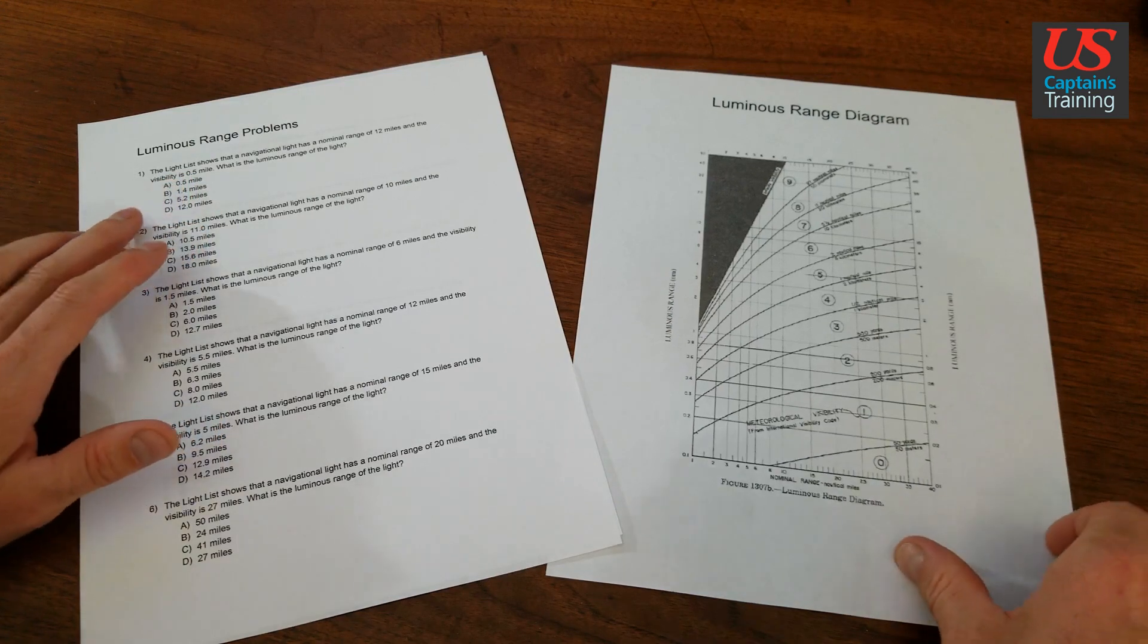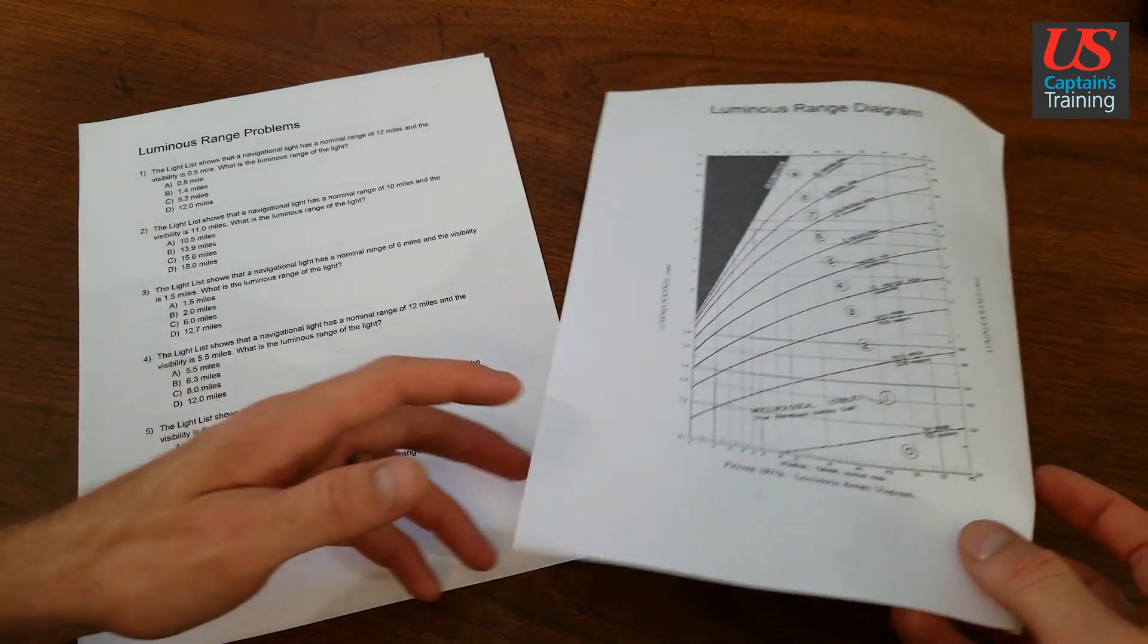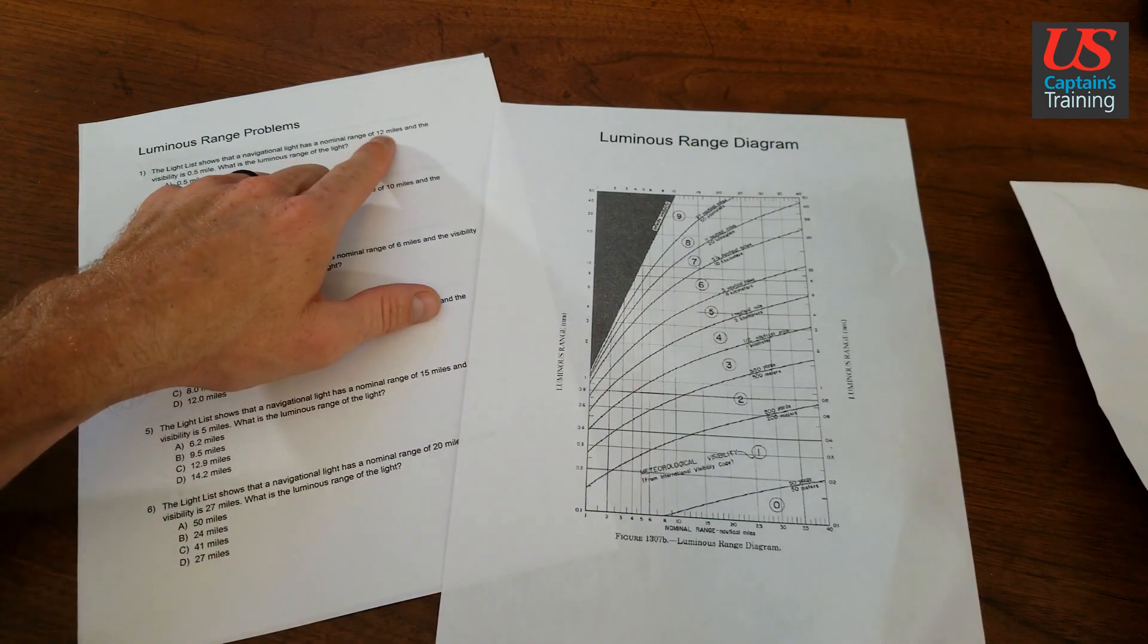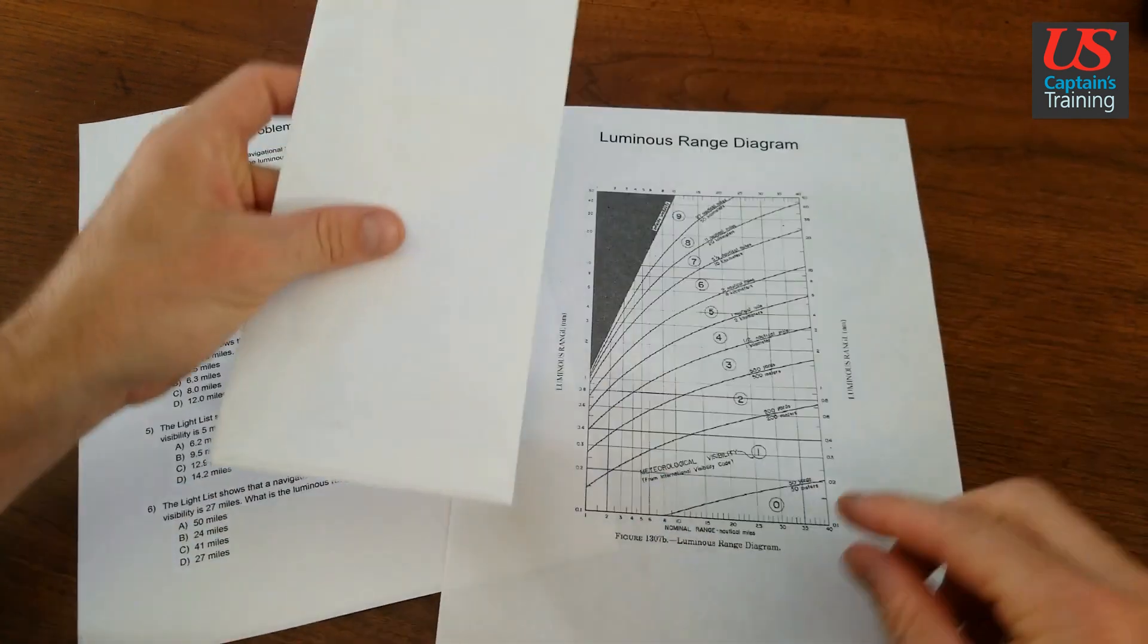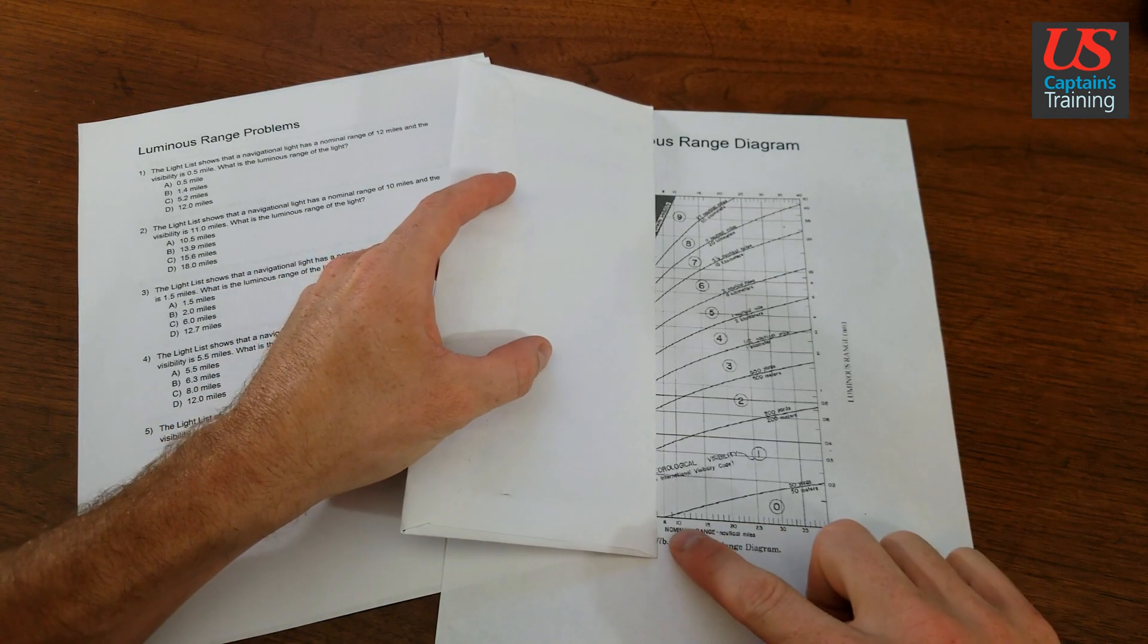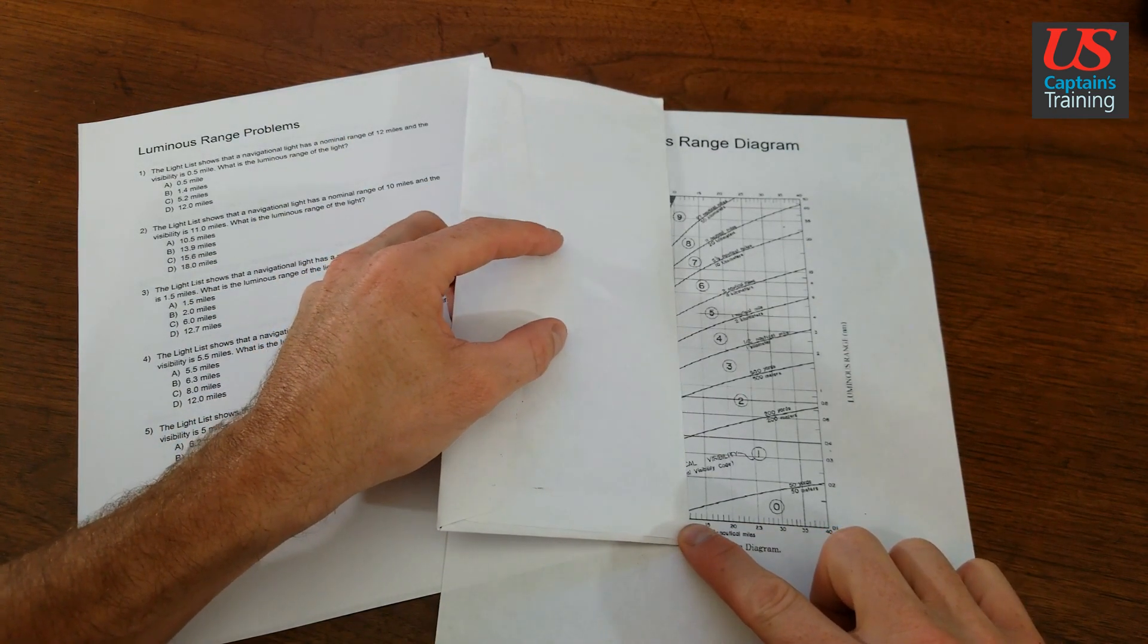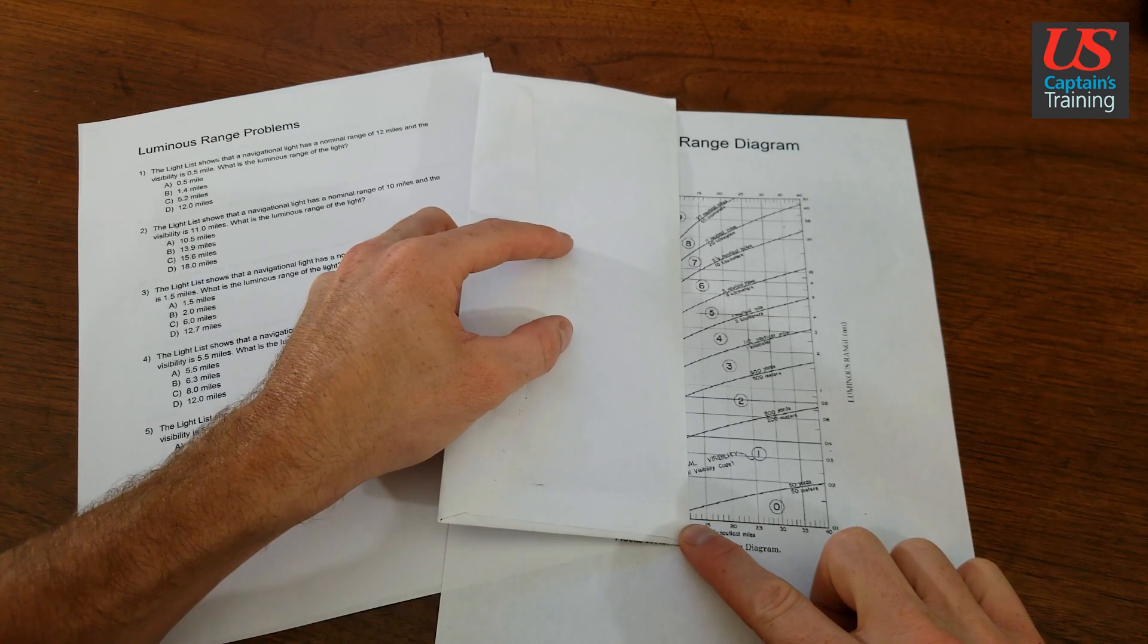So we come to the luminous range diagram, find a nominal range of 12 and a visibility of 0.5. So we can line up 10, 11, 12. We'll line it up at the top too. We'll draw this line. 11, 12.